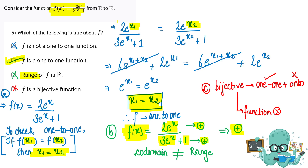So f(x) is always positive. The co-domain was the set of all real numbers, which is not equal to the range, because the range is only the positive real numbers. Therefore option C is incorrect, since the range of f is not all of R — it is only the positive reals.